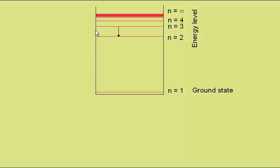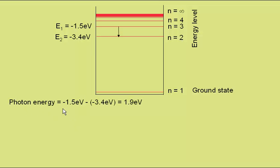Now the n equals 3 energy level is at minus 1.5 electron volts. n equals 2 at minus 3.4 electron volts. So the photon energy is going to be the difference between the amount of energy it has here and the amount of energy it has here.